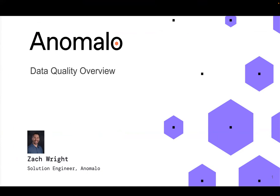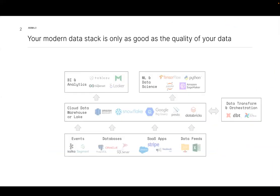Across my entire career, every single job I've had, every single data set I've helped clients with, my entire experience has been plagued by data quality issues. That's why I joined Anomalo. Anomalo is a modern data quality platform that automatically catches anomalies in your data and finds the root cause. We're going to go into a quick product demo of what Anomalo can help with in the data quality space.